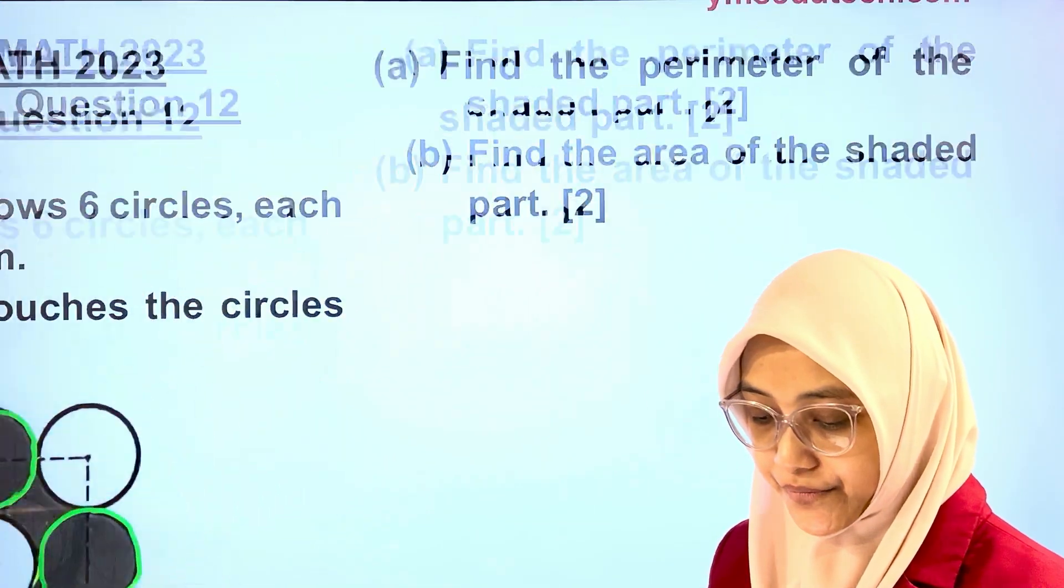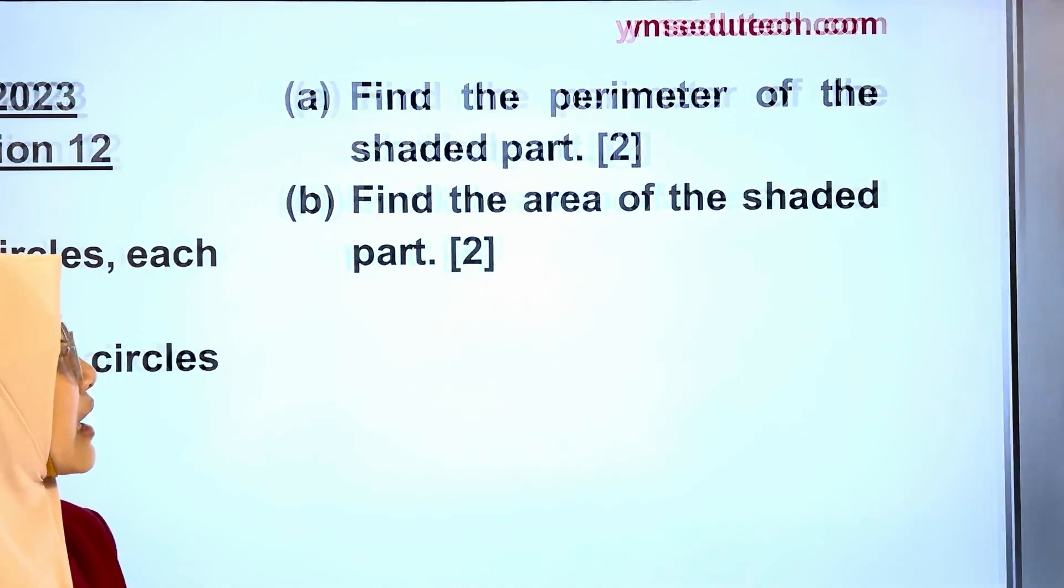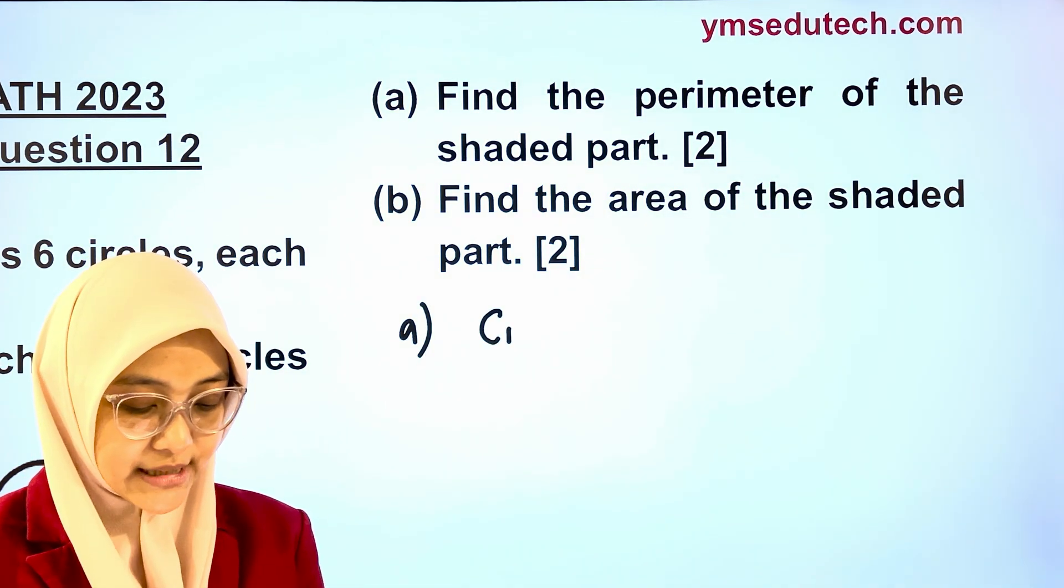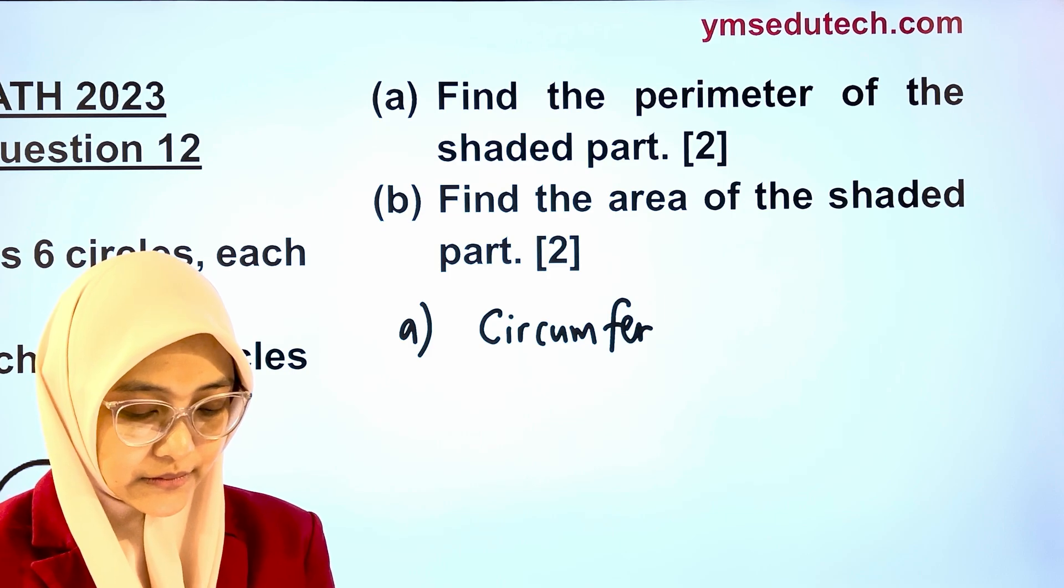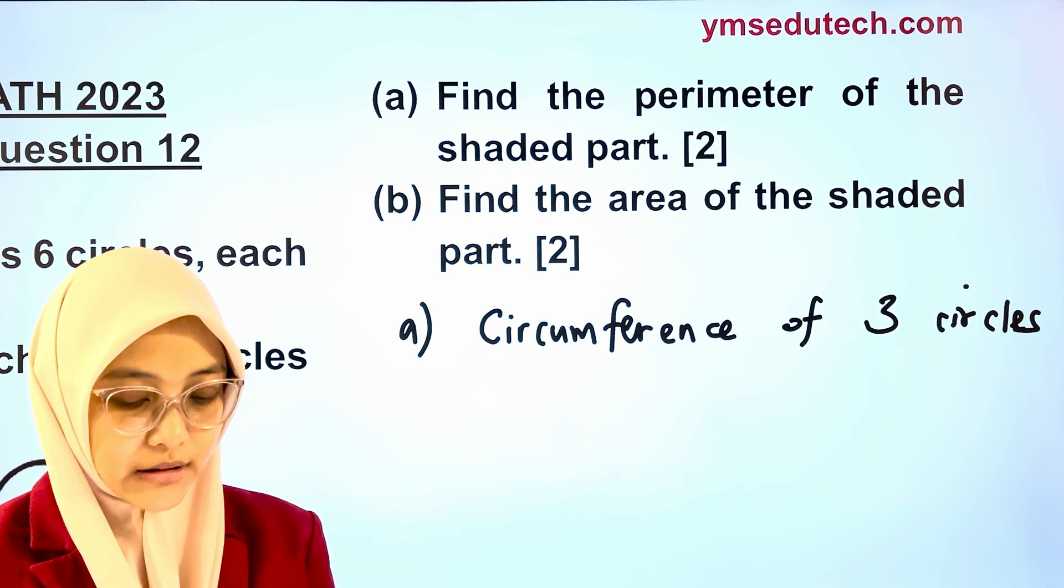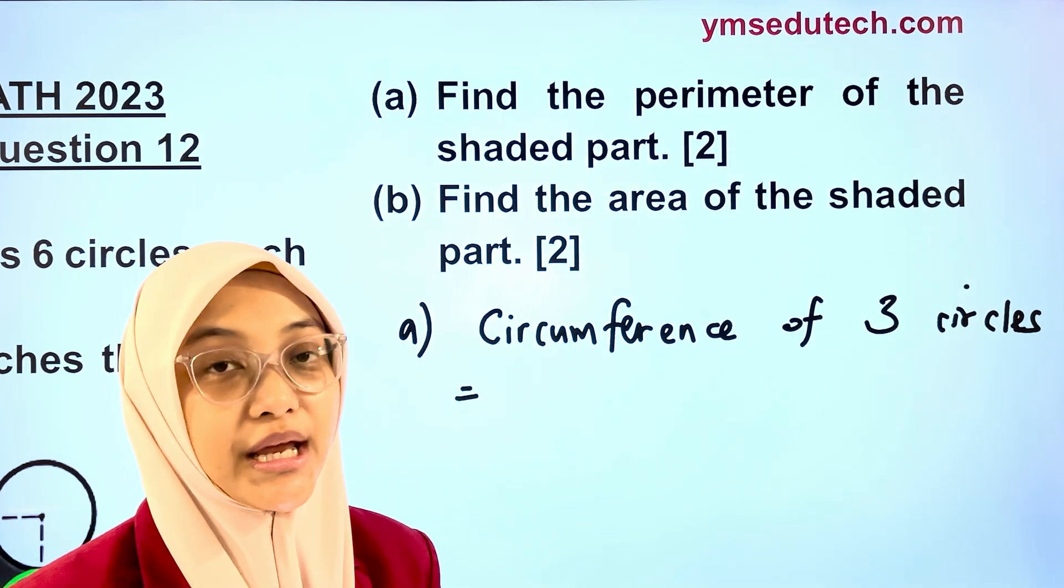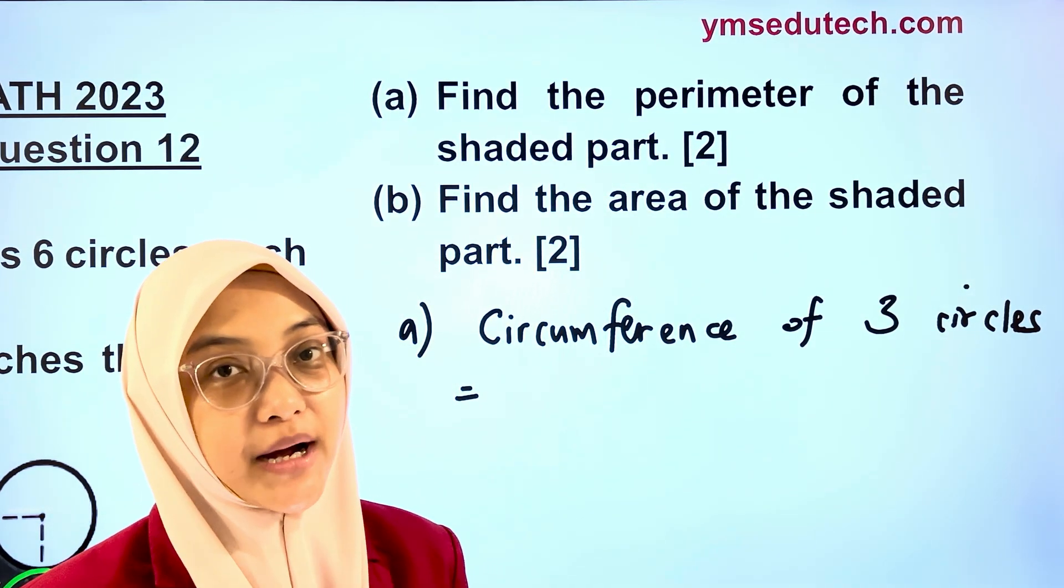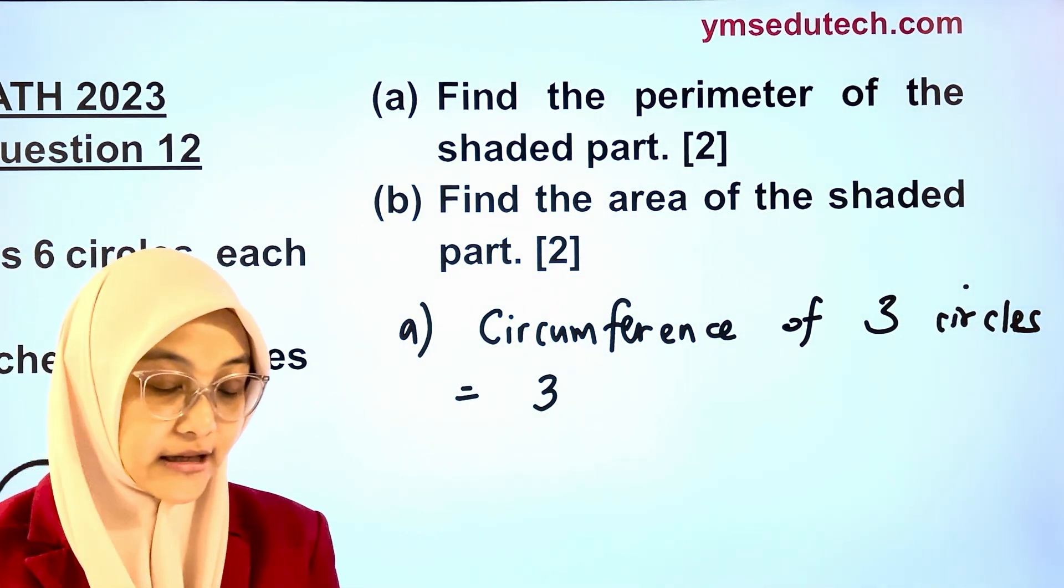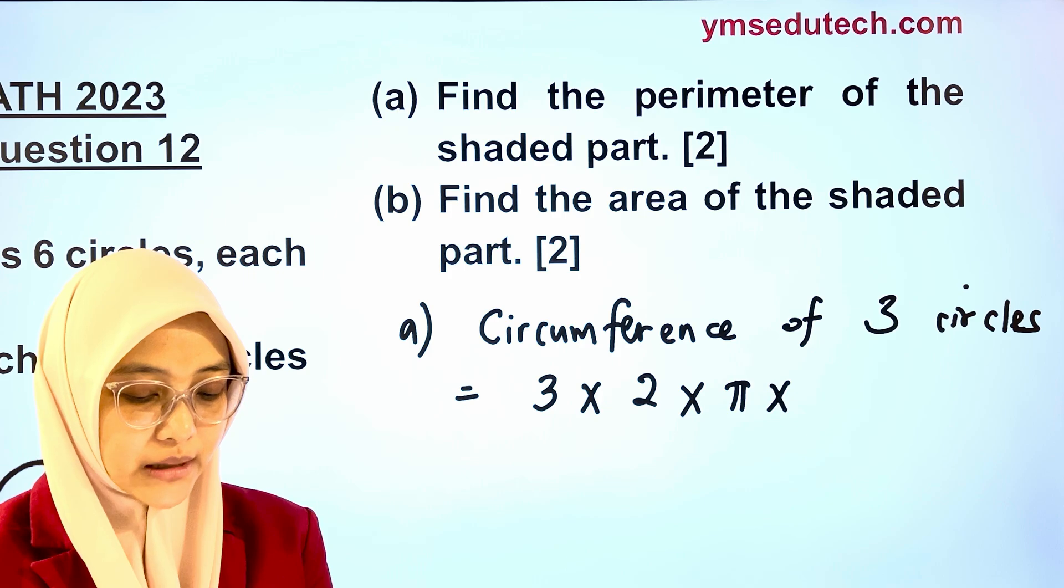Now let's calculate together. The perimeter of the shaded part, part A, is equals to circumference of 3 circles. What is the formula in finding circumference of a circle? That will be 2 multiplied by pi multiplied by radius. And we have 3 circles here, so don't forget to multiply the formula with 3. So 3 multiplied by 2 multiplied by pi multiplied by radius.